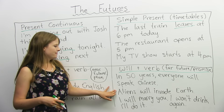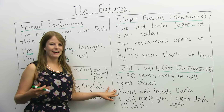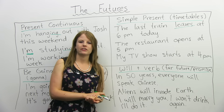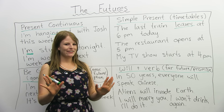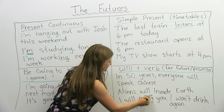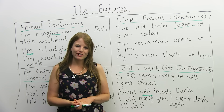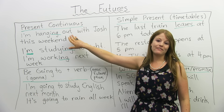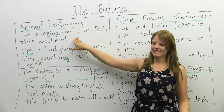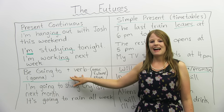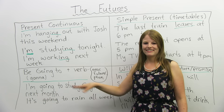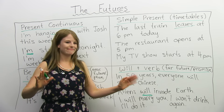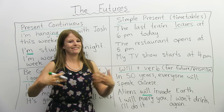Another example: 'Aliens will invade Earth.' In 25 years, aliens are coming — they will invade the Earth. Luckily I'm using will, which means I'm not really sure. If I said 'aliens are invading the Earth' you'd be very scared. And if I said 'aliens are going to invade the Earth' — I know this, I have secret government documents — you'd be scared too. But with will, it might not happen.